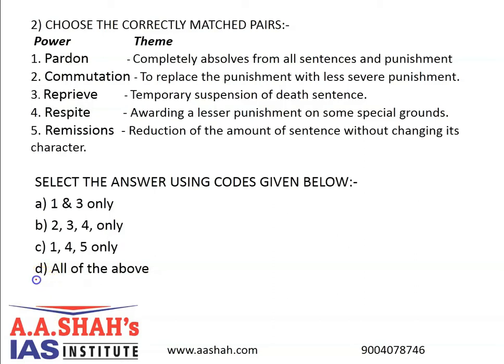The correct answer is D: All of the above. Article 72 of the Indian Constitution says that the President shall have the power to grant pardons, reprieves, respite or remission of punishment, or to suspend, remit or commute the sentence of any person convicted of any offence. The President can exercise these powers in cases where punishment is by court martial, where the offence relates to a matter under the executive power of the union, or where the sentence is death. The power to pardon is exercised on the advice of the Council of Ministers. This is in news because the President rejected mercy pleas by convicts in the Nirbhaya case.